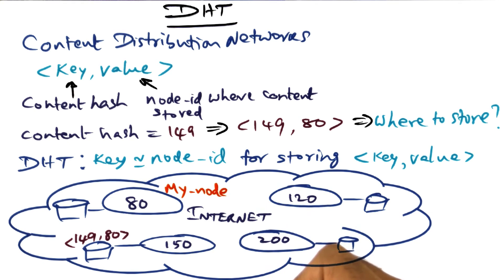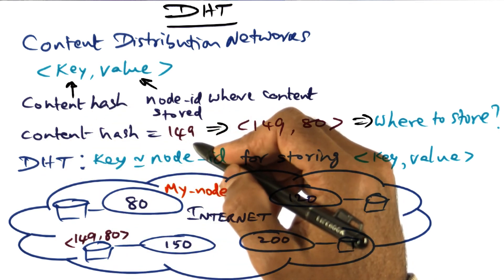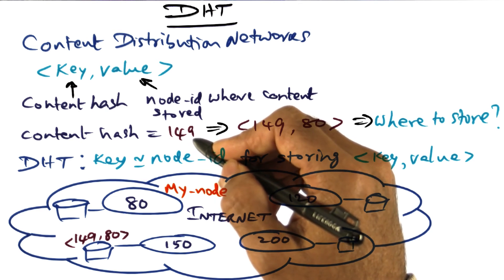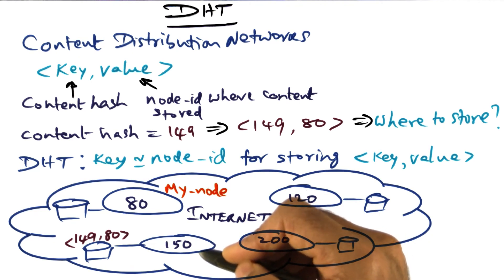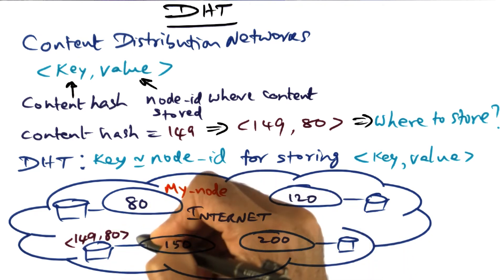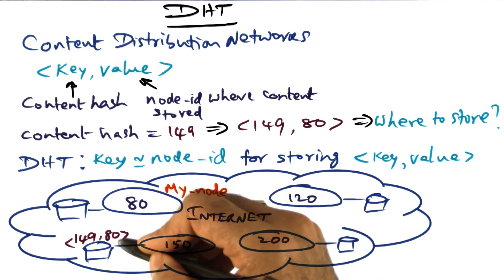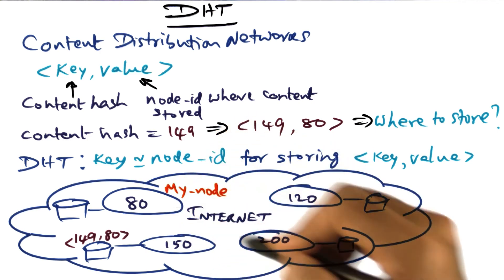Now, if you're looking for my India trip video, you know that the unique signature associated with that is 149. And you will know because of the structure of the DHT that the place to look for the signature 149 or the key 149 is a node whose address is also equal to this key value or close enough. 150 is the one that is close enough. So you'll go to 150, and from 150 you will get this key value pair. And once you get this key value pair, you will know that the content is stored in node 80, and then you can come to me and get the content from me.